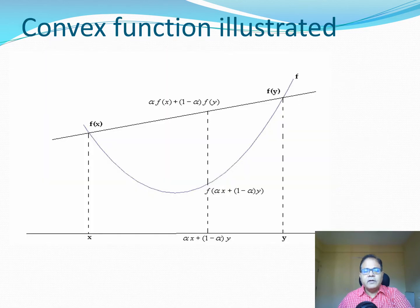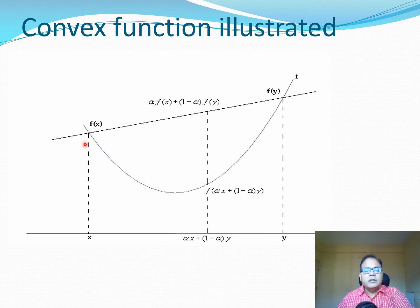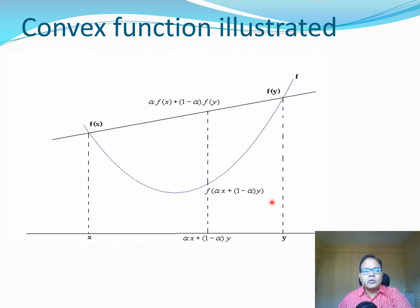You can see it figuratively in the slide. This is the point (x, f(x)) and this is the point (y, f(y)), and here I have drawn the line given by this expression. The curve or function at these same points lies below this line. You can also start seeing geometrically why the convex function may have a global minimum, because all these function values are below this particular line.